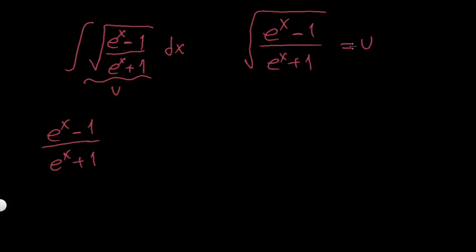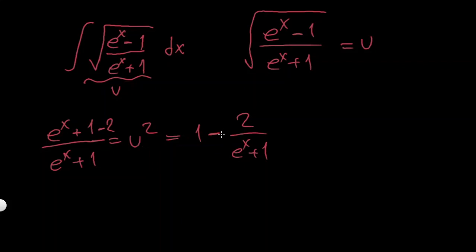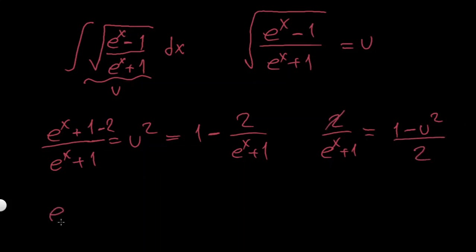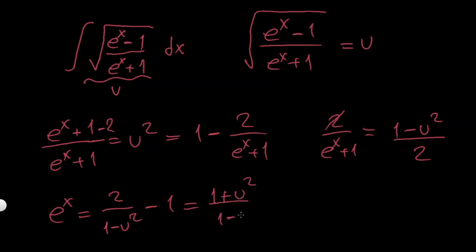I have e to the x minus 1 over e to the x plus 1. If I square both sides, I get u squared. I can rewrite the left side as 1 minus 2 over (e^x + 1), giving 1 minus 2/(e^x + 1) = u squared. Rearranging, 2/(e^x + 1) = 1 minus u squared. Taking reciprocals and adjusting, e^x + 1 equals 2 over (1 minus u squared), leading to 1 plus u squared over 1 minus u squared.